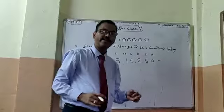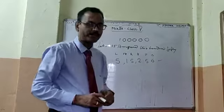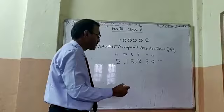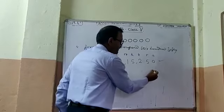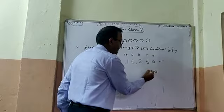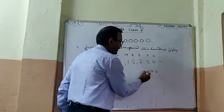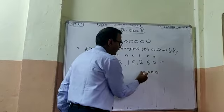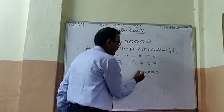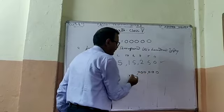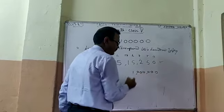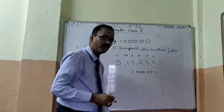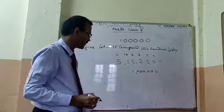And one is the international process. In the international process: ones, tens, hundreds, thousands, ten thousands, hundred thousands, then million. These are the processes.